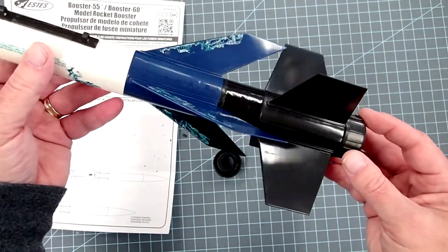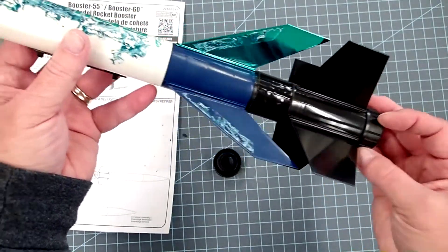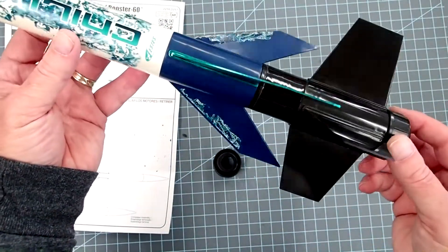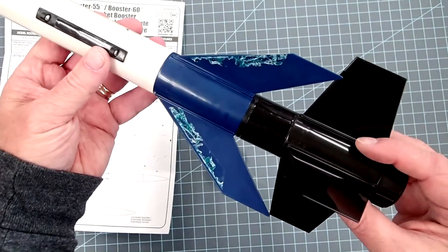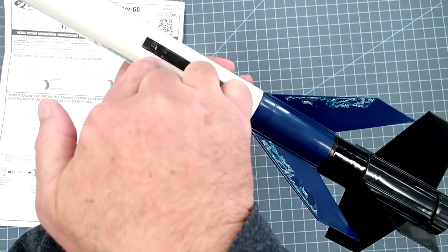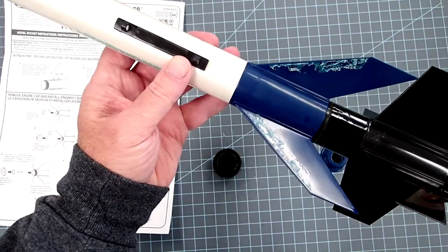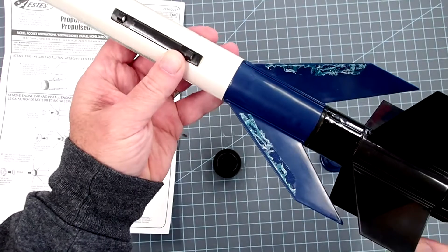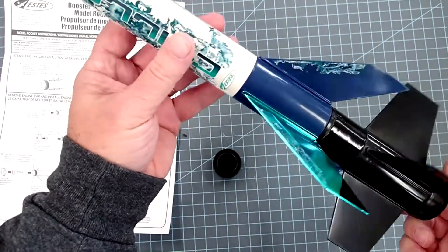Okay, so now, and it looks kind of weird because you've got, in this case, a three-fin rocket with a four-fin booster. And all you have to do is just make sure that it's aligned so that the launch rod can still go up through the launch lugs here. The rest of this does not make a lot of difference.